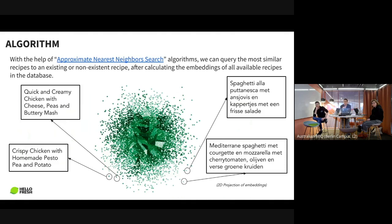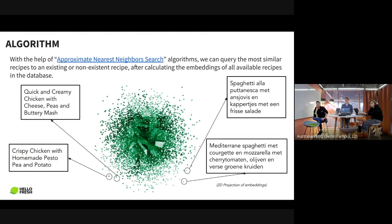Imagine we applied recipe embeddings to all recipes in our database, then projected them into two dimensions using a dimensionality reduction technique like PCA or t-SNE — we would end up with something like this. Each cross shows a recipe embedding. We can deploy approximate nearest neighbor search on any point to find the closest points in this vector space. For example, the recipe 'Crispy Chicken with Homemade Pesto, Pea and Potato' is close to 'Quick and Creamy Chicken with Cheese, Peas and Buttery Mash' — similar recipes by ingredients and dish type.